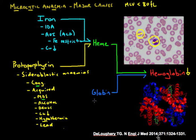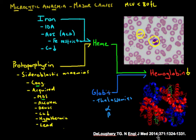Problems with globin chain synthesis are most commonly due to the thalassemias. There are a whole range of thalassemias — alpha, beta, and others. The thalassemias are the most important group affecting globin synthesis, and the minor thalassemias would probably rank third on the list of causes of microcytosis.